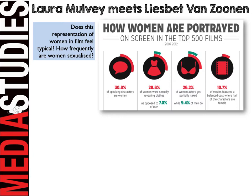The question was: does this representation of women in film feel typical? Here are some statistics from between 2007 and 2012. Only 30.8% of speaking characters in film are women. Someone might say that's not too bad, but if you consider that half the planet's population are women — 50% — that seems quite a strange statistic. These statistics will remind you of what we looked at in the Bell Hooks lesson.